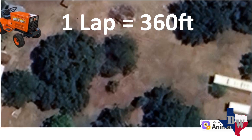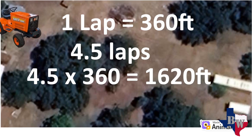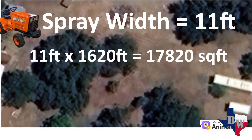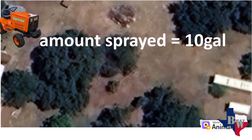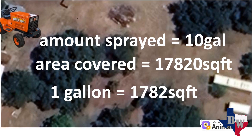We ran four and a half laps, so if you multiply those together, that gives you 1,620 feet — that's the distance we went. The width of our sprayer is 11 feet, and if you think about length times width, 11 feet times 1,620 gives you 17,820 square feet — that's the amount of area we covered with our sprayer. We sprayed 10 gallons. So for 10 gallons we covered 17,820 square feet. If you divide that by 10, that tells you one gallon covers 1,782 square feet. Now that we know that, we can go figure out how to mix the chemicals.